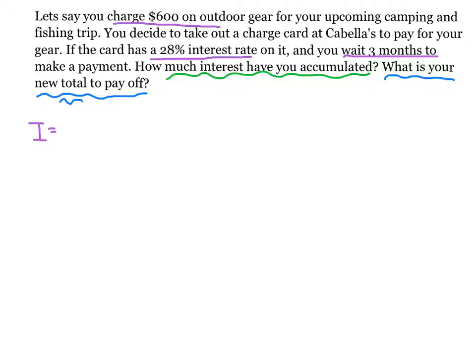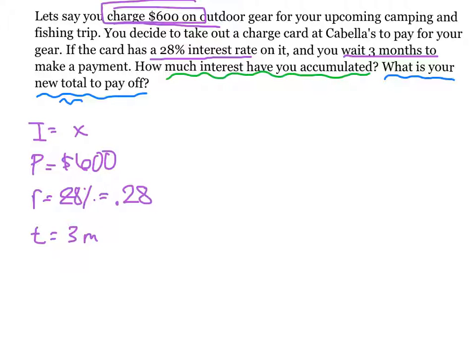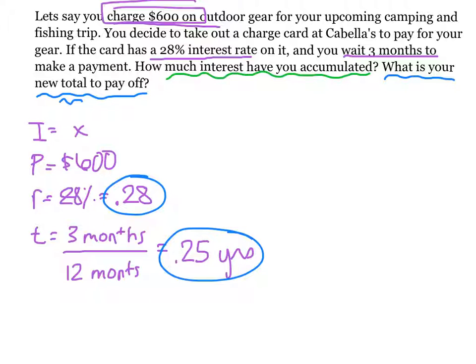I, our interest is what we're finding. P, principal amount. So how much you put in, how much you start with. We're starting with charging $600. So that's our P. Our rate is 28%, which is .28 in decimal form. And our time is three months. That's not in years. So what you do when you're given months, to change it to years, you divide by the number of months in a year. So divide by 12 months. 3 months divided by 12 months is .25 years. Now our rate is in decimal form and our time is in years. So we're ready to go.